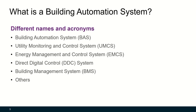So what is a building automation system? There are different names and acronyms, such as building automation system (BAS), utility monitoring and control system (UMCS), energy management and control system (EMCS), direct digital control system (DDC), or building management system (BMS). There are many others.